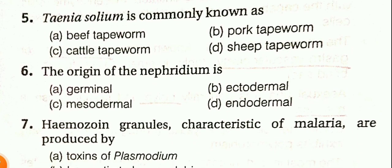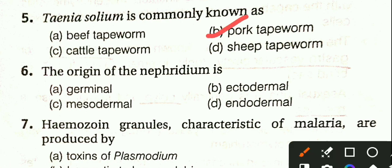Question 5: Taenia solium is commonly known as beef tapeworm, pork tapeworm, cattle tapeworm, or sheep tapeworm. The answer is pork tapeworm. The origin of the nephridium is germinal, ectodermal, mesodermal, or endodermal. The answer is mesodermal.